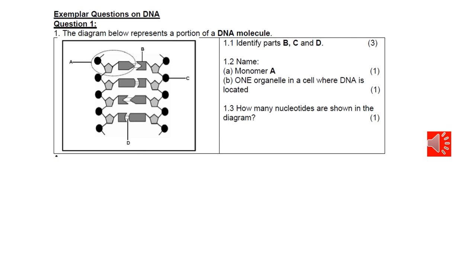Question 1.3: How many nucleotides are shown in the diagram? Remember, a nucleotide is made up of a phosphate, a sugar and a nitrogenous base. If you count the nucleotides within this diagram, the correct answer is 8.